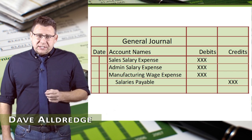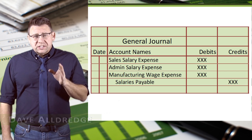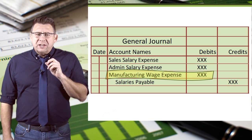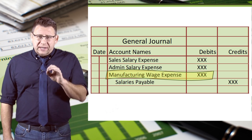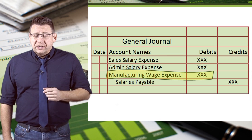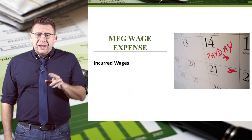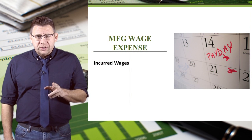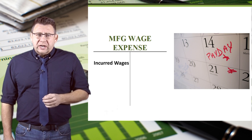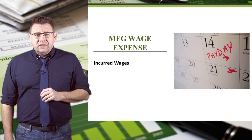Labor is an expense. The payroll department records this expense when salaries are incurred. However, manufacturing wages expense should be a product cost, whereas other salary expenses are period costs. When manufacturing labor is incurred, it needs to be moved to inventory accounts so it doesn't end up as a period cost on the income statement.